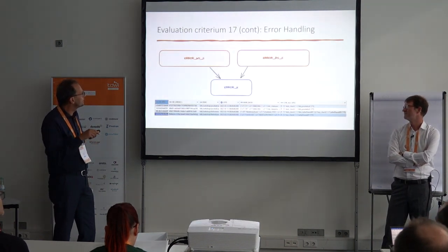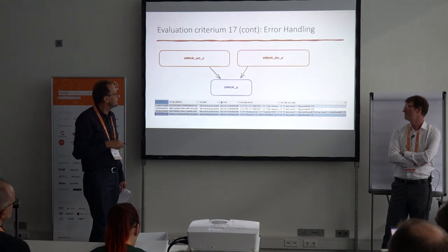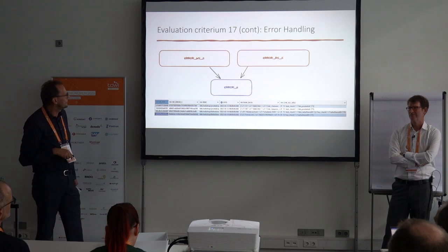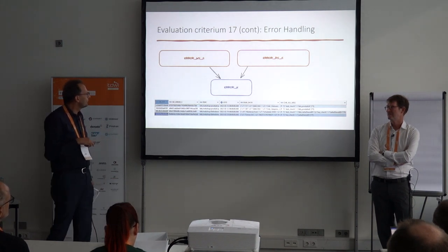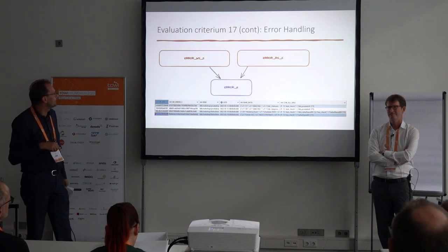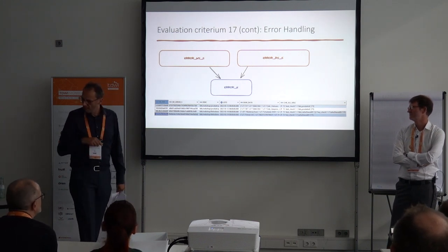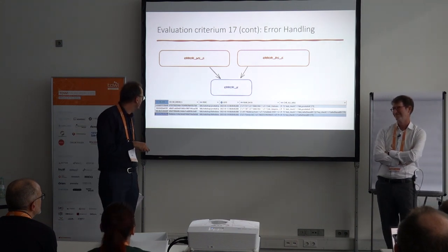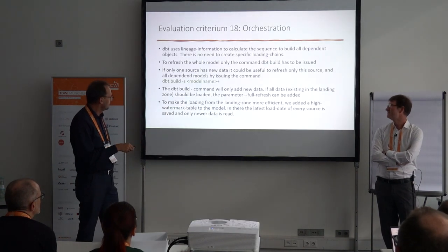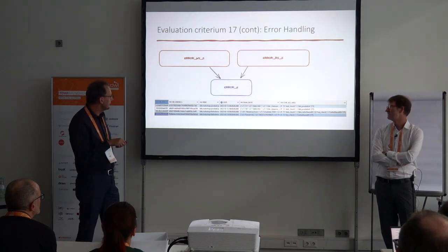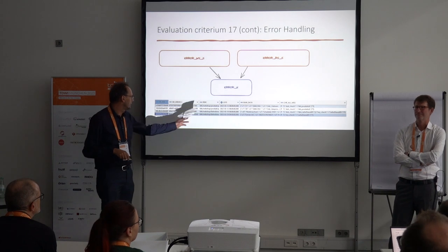The records that fail we load into our error mart. There's a pre-stage view that unions all source table loads together in a defined structure, then a normal stage, and an error vault containing an error hub and one error satellite per source system. Michael fortunately provided some errors, and those are shown in the table — you can see duplicate checks and key checks there.